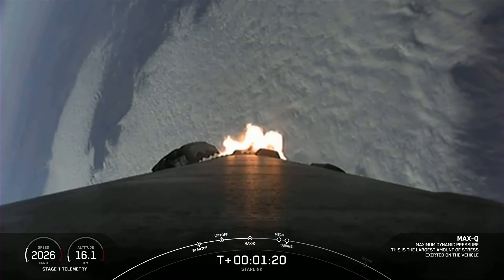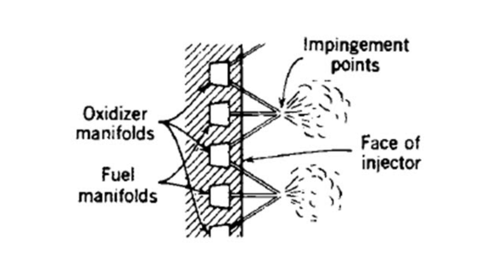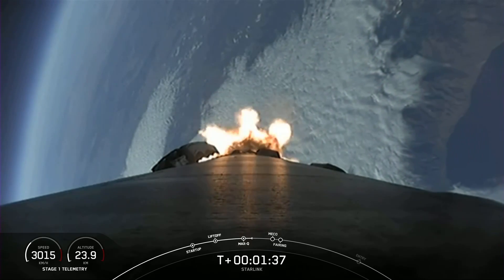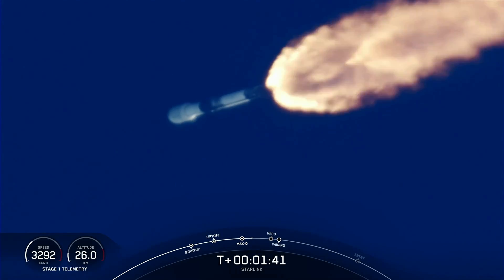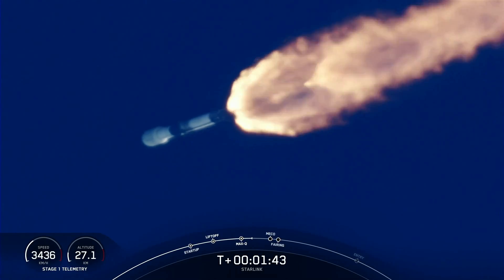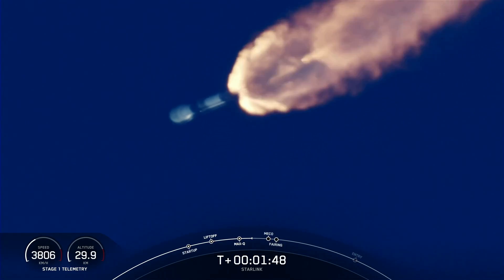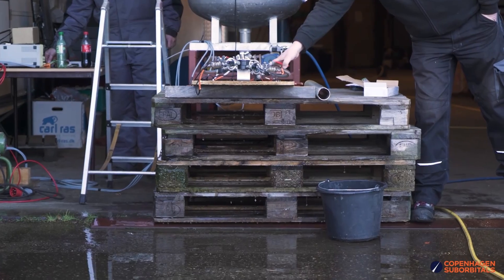To increase the mixing efficiency, the injector can be designed so that the propellant flows hit each other as they exit the manifolds. This is known as an impinging injector, and almost all injector designs use impingement in some form, even as early as the 1920s. Simple impinging injectors aren't much harder to manufacture than showerhead injectors and look very similar. The only difference is the holes are drilled at an angle and face each other so that the propellant streams intersect. Because of the adequate efficiency and simple construction, these are the most common injector type for amateur and university-built rocket engines.